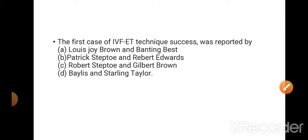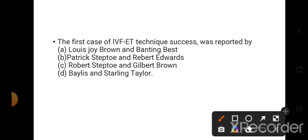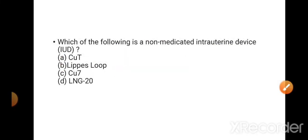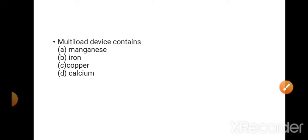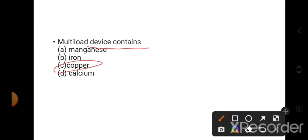The first case of IVF technique success was reported by Patrick Steptoe and Robert Edwards. Which of the following is a non-medicated intrauterine device? The correct option is Lippes Loop. Copper-T and Copper-7 are copper-based IUDs, and LNG-20 is a hormonal-based IUD. Multiload device contains copper. Copper mechanism inhibits the motility of the sperm.